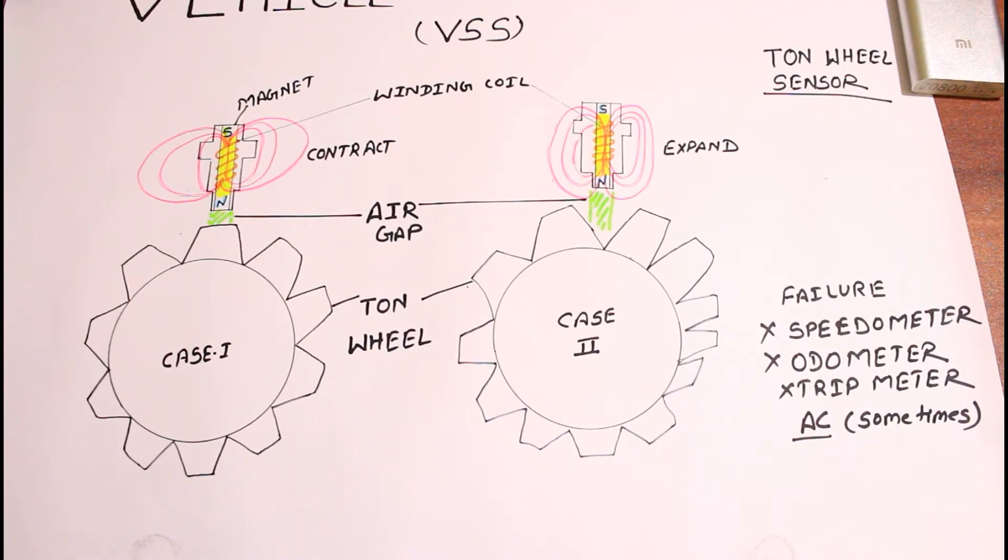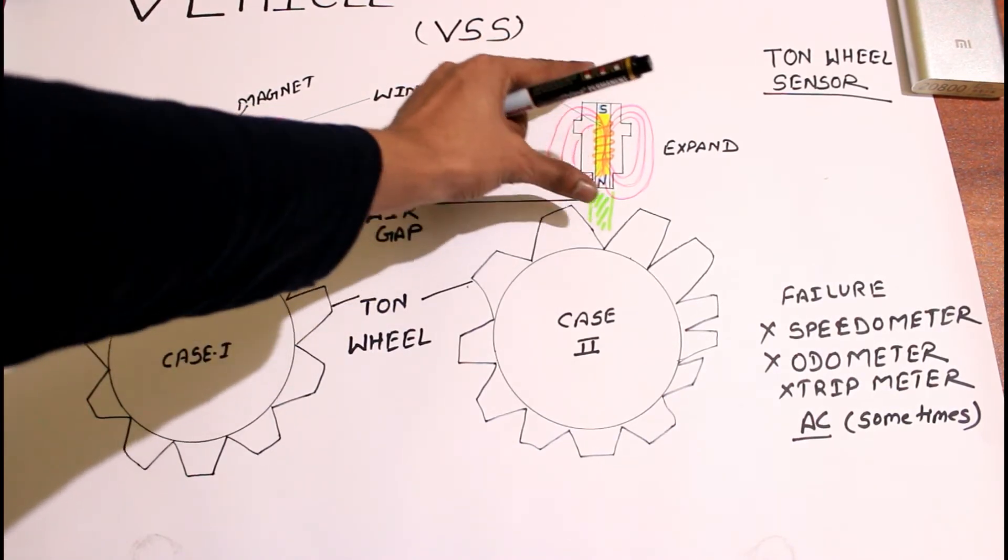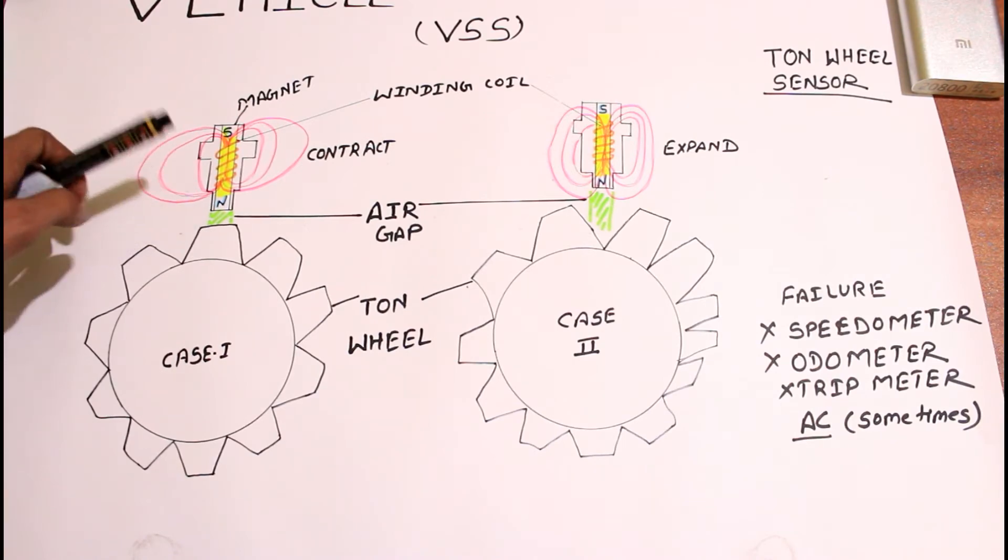As this occurs, the magnetic field or the flux from the permanent magnet within the sensor will expand or contract. If the gap is more, the flux expands, and if the gap is less, the fluxes contract.